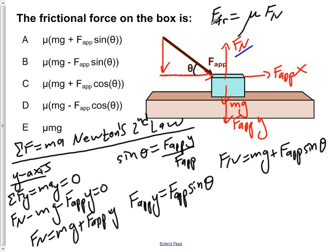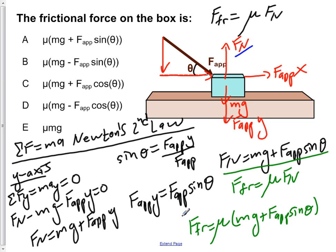Now, in order to solve for the force of friction where F friction is equal to mu F_N, we would see that our force through the friction is equal to mu. We're now just going to simply plug in for what F_N is, which is going to be mg plus force applied times the sine of theta.